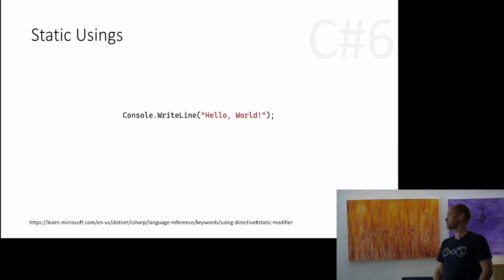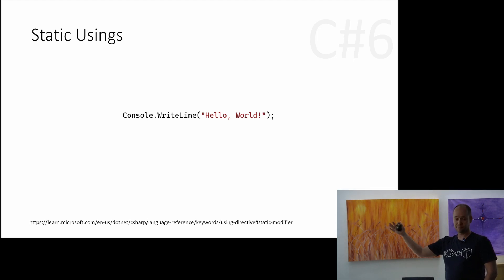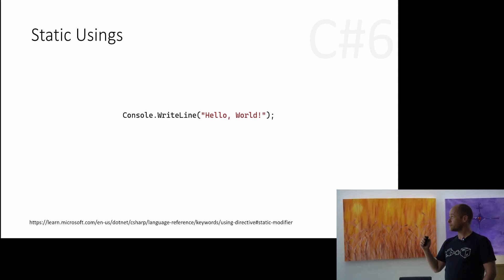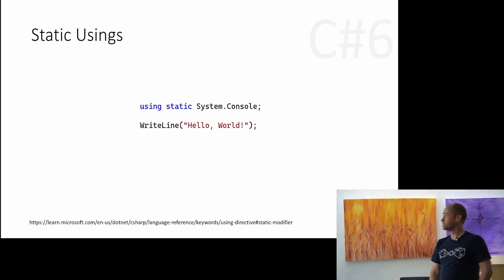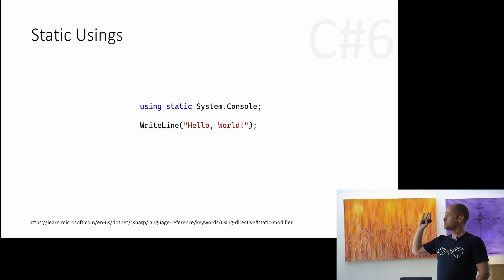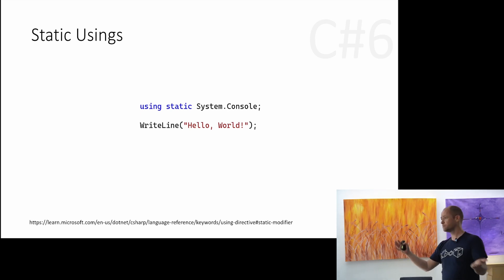Finally on usings — static usings. If you do File > New Project, a new console project, you'll see this now. What you can do is change to a static using so you only have to write the method name on that type. For example, you explicitly say using static System.Console, and then you can just write WriteLine and all the other methods on that type. This works for your own types as well as system ones. Be aware that in a larger file, if someone sees an unknown method, it can be confusing because the using isn't visible in the same file.